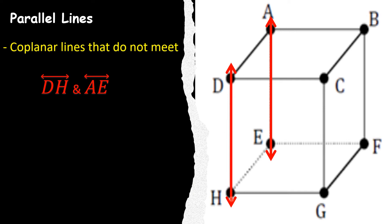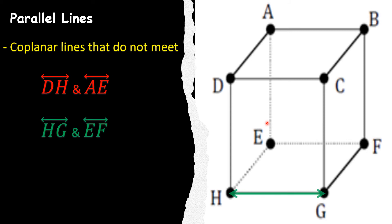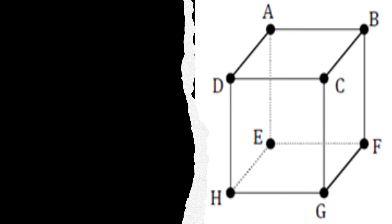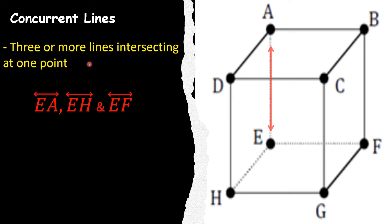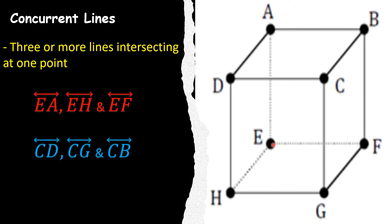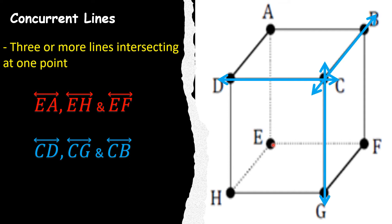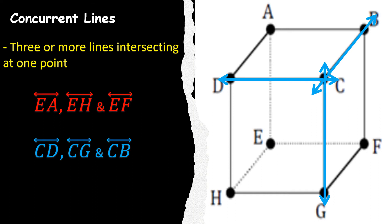Line DH and Line AE do not meet but are on the same plane. Another example: Line HG and Line EF do not meet but are on the same bottom plane. Take a look at the figure and find more examples. Next, concurrent lines are three or more lines intersecting at one point. For example, Lines EA, EH, and EF intersect at Point E. Another example: Lines CD, CG, and CB intersect at Point C.